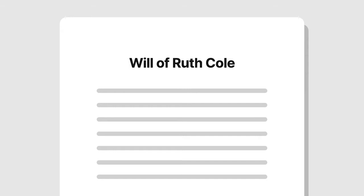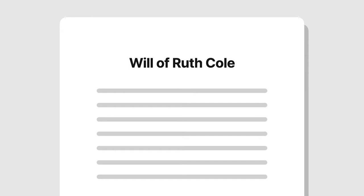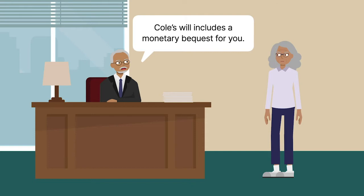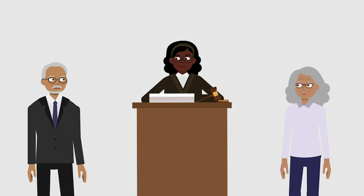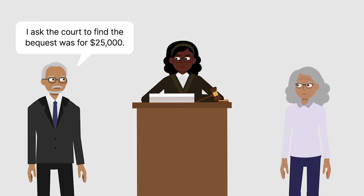Ruth Cole executed a will and died shortly afterward. Cole's will included a monetary bequest to her friend Veda Vining. The words of the will said that Vining would receive $200,000. In parentheses following those words, however, the will numerically identified the amount of the bequest as $25,000. The personal representative of Cole's estate petitioned the trial court and asked it to find that the bequest was for $25,000.